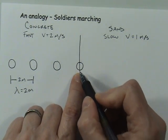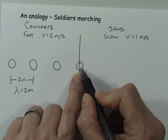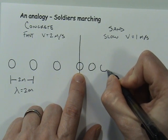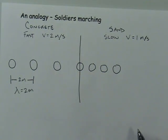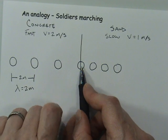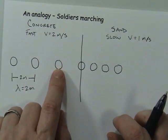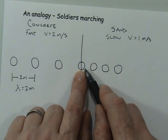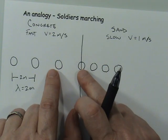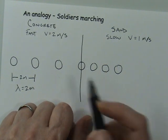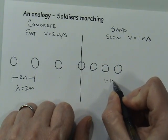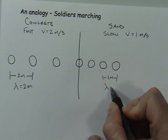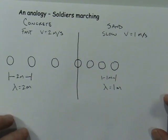Because there was a soldier in front, and in the previous second he only managed to walk one meter, he is much closer. So I'm going to draw that next soldier much closer on this side than on the other side. This soldier traveled two meters per second, so in one second he traveled two meters. But this guy, traveling in the sand, only traveled one meter. Because one guy traveled two meters while the other traveled one meter, the gap between them closed down to only one meter — and since the soldiers' heads represent crests of the waves, the wavelength is also one meter.